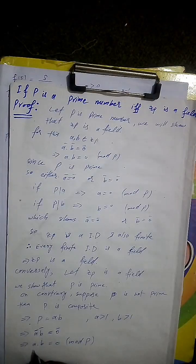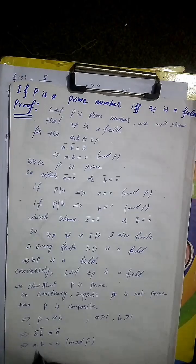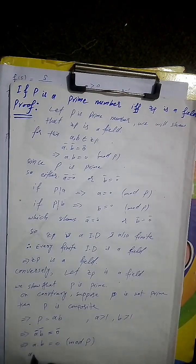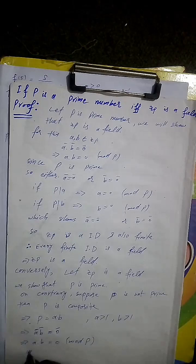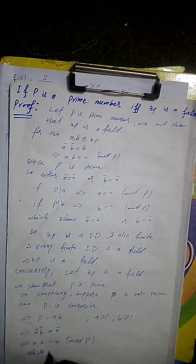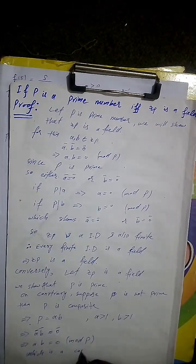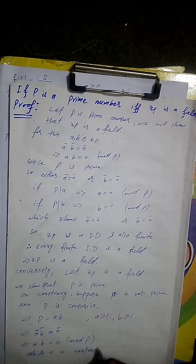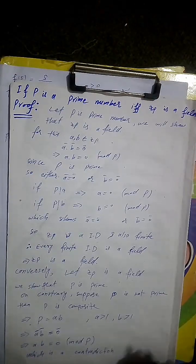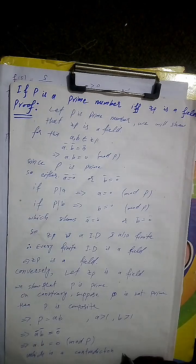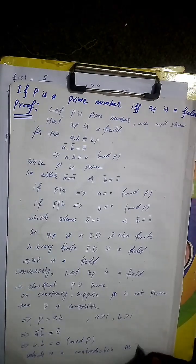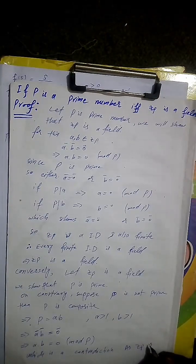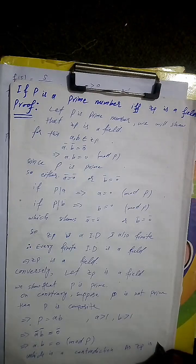So we have A into B contradiction, which is a contradiction, as Zp is a field.